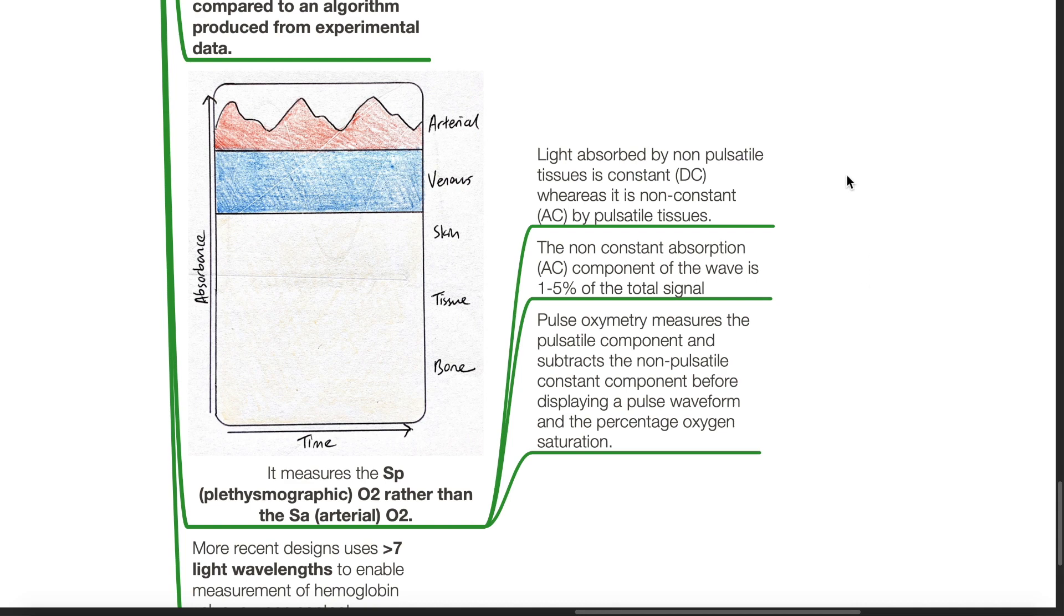As light absorbed by non-pulsatile tissue is constant, whereas it is non-constant by pulsatile tissues, the non-constant absorption component of the wave is 1 to 5% of the total signal. Pulse oximetry measures the pulsatile component and subtracts the non-pulsatile constant component before displaying a pulse waveform and the percentage oxygen saturation.